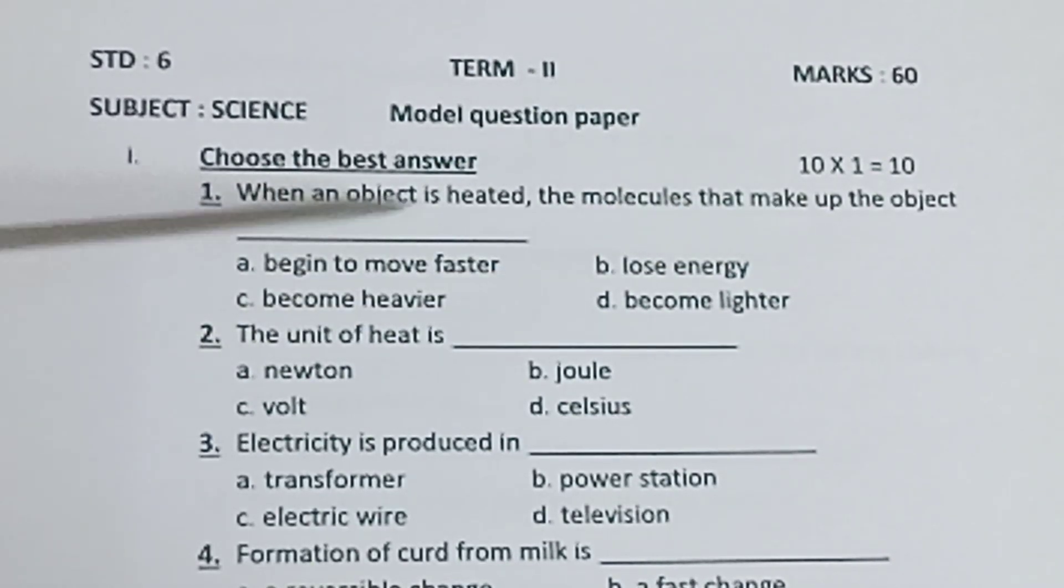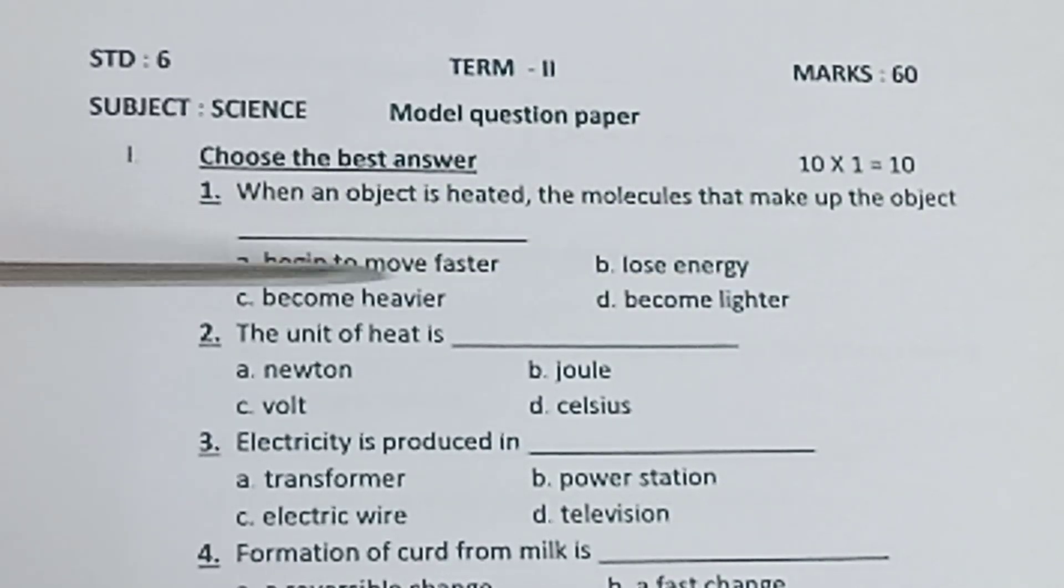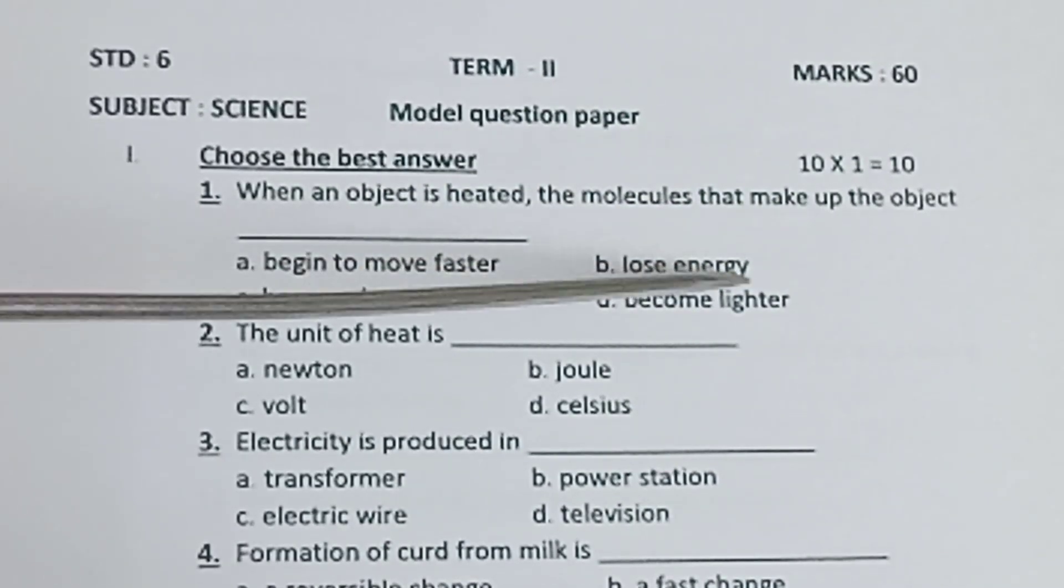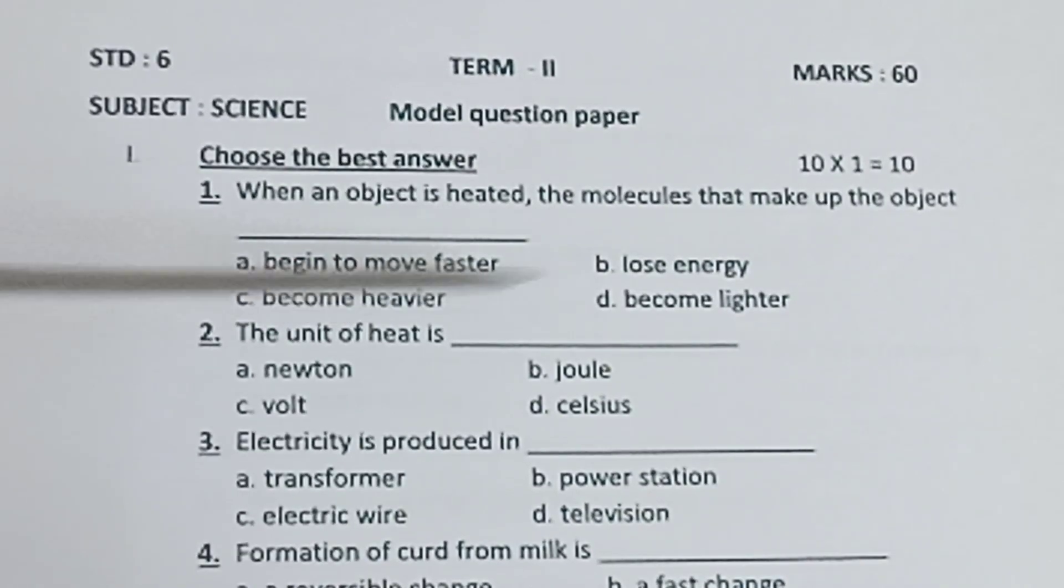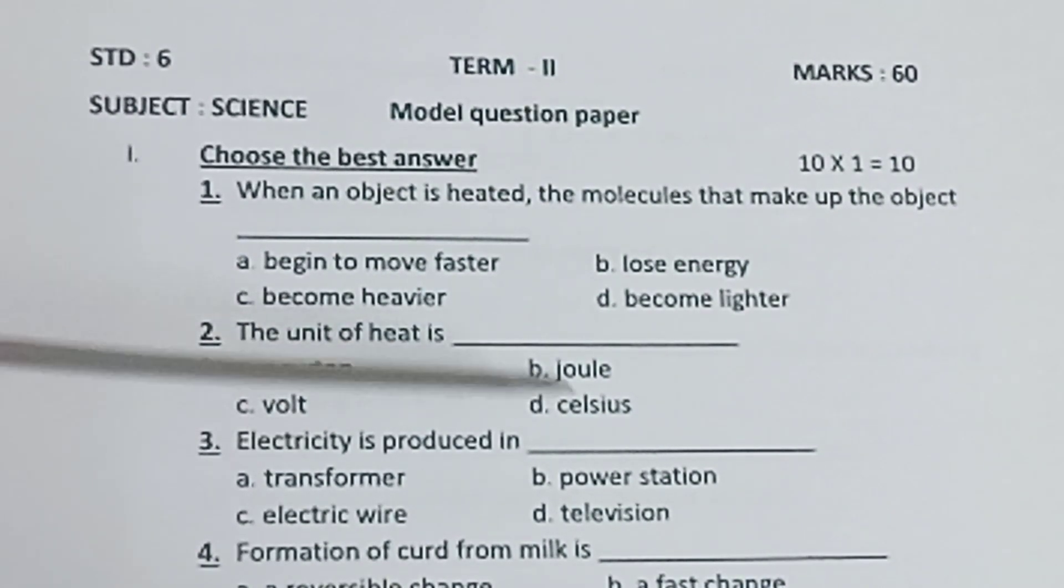First one: When an object is heated, the molecules that make up the object - a) begin to move faster, b) lose energy, c) become heavier, d) become lighter. Second one: The unit of heat is - a) newton, b) joule, c) volt, d) celsius.